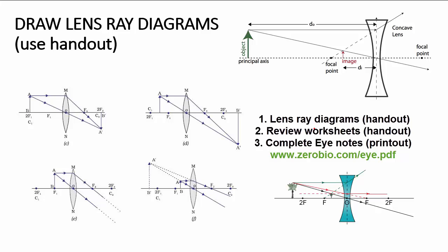If you don't have the review printed out, hopefully the supply teacher can find extra copies in the folder on my desk in the science office. After the lens ray diagrams and review worksheets, if there's any time left, make sure you have all the answers to the eye printout. I'll put a link up for the supply teacher — go to that link, find the eye PDF, and finish up the eye material.